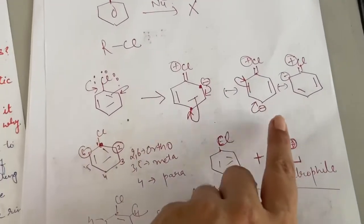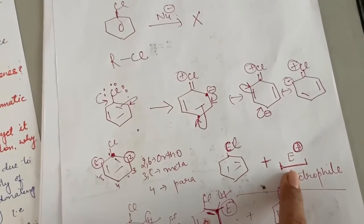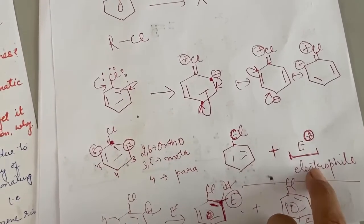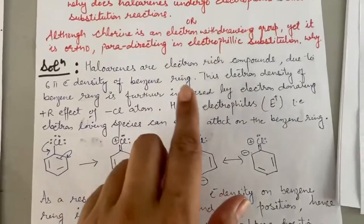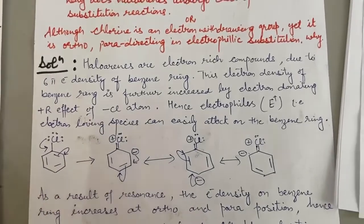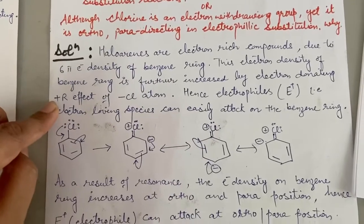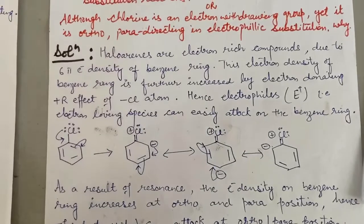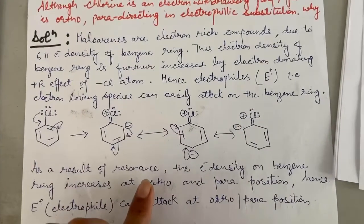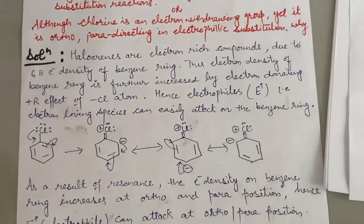After drawing the resonating structures we see that ortho and para positions acquire negative charge, and on that negative charge a positively charged species — the electrophile — can easily attack. Haloarenes are electron-rich compounds due to 6 pi electron density on the benzene ring. Plus R effect is present because benzene ring is receiving electrons from the halogen lone pair. If a group pulls electrons away from benzene it is minus R; here electrons are being donated, so it is plus R effect. Due to plus R effect, electron density at ortho and para positions increases, hence electrophile attacks there.